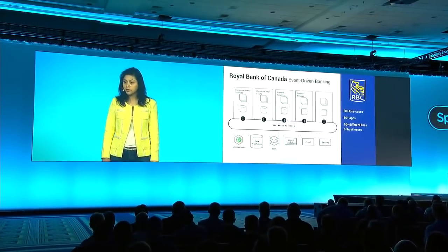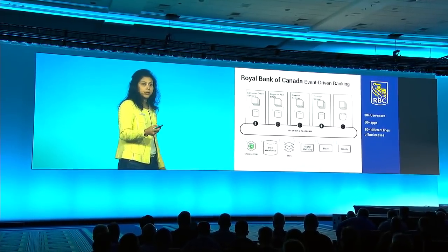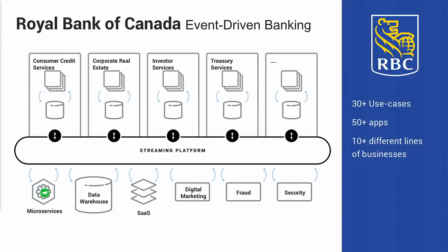The banking industry is also transforming rapidly — event-driven banking is a significant overarching trend. Royal Bank of Canada started with a simple project to move away from mainframes, but now has a streaming platform powering their move to microservices and Spring applications. This has done a number of things for the bank, including reducing anomaly detection time from weeks to seconds.